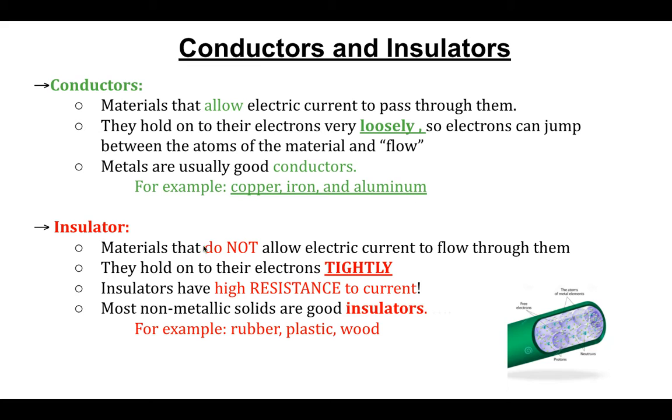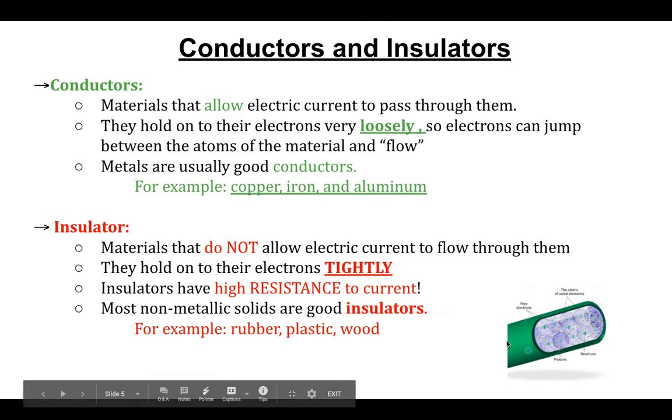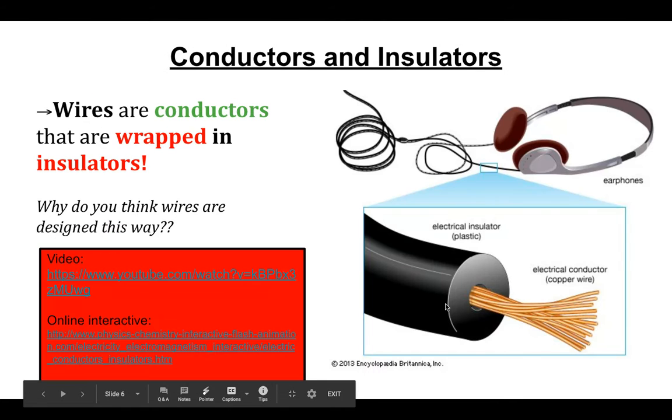Insulators, on the other hand, don't allow their electrons to jump around. They hold onto them really tightly because, again, some atoms just really cling to their electrons. So when we look at a wire, for example, like the wires in a headphone.